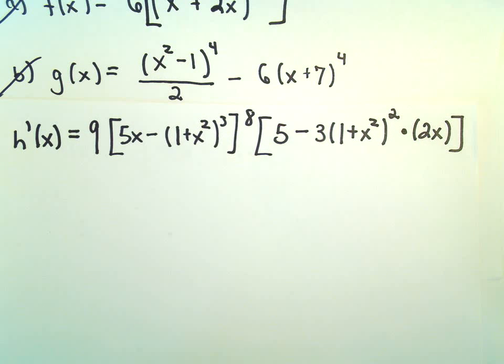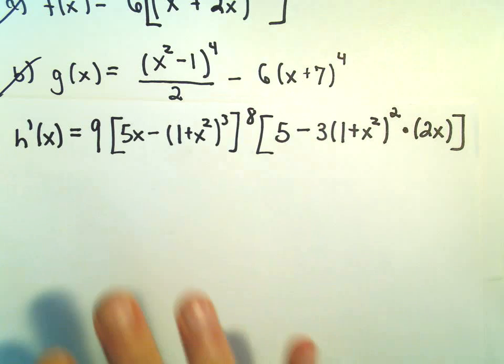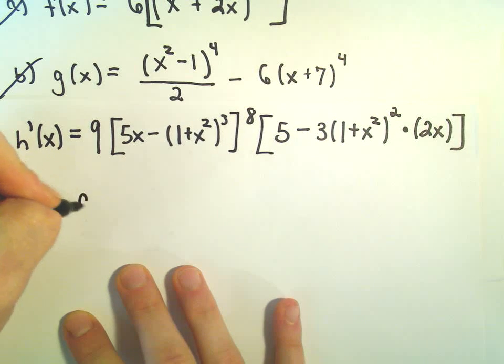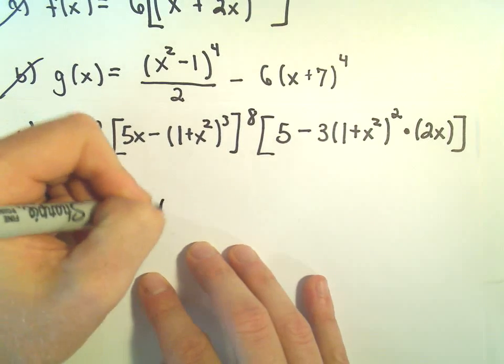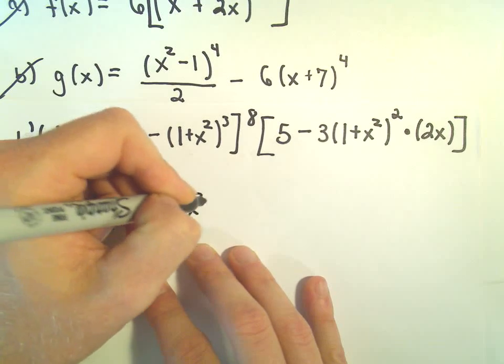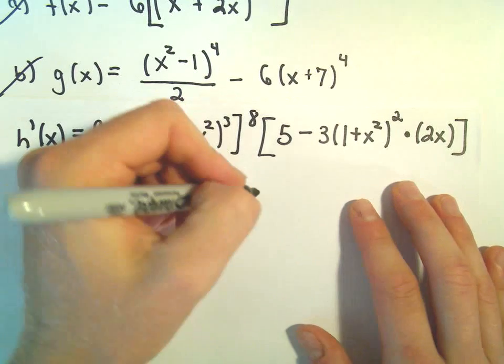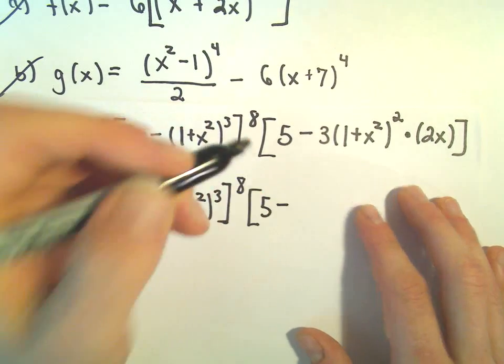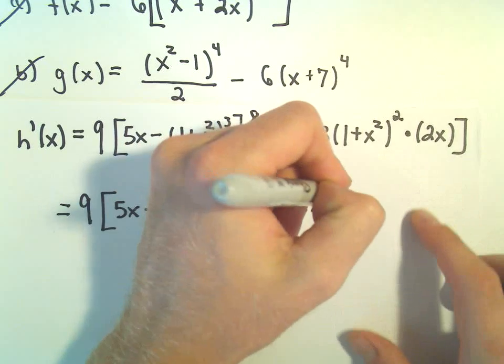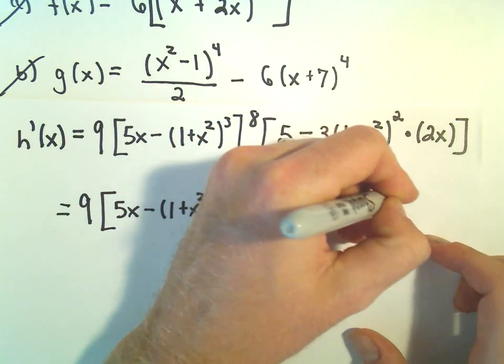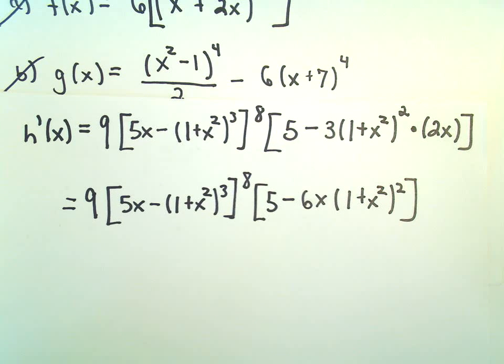In terms of simplification, I don't see a tremendous amount to do. I'm going to leave the 5. You don't want to cube this and then raise it to the 8th power. At least I wouldn't want to. And then we have 5 minus, I guess we could do 3 times 2x. That would give us 6x. Then we still have 1 plus x squared squared.